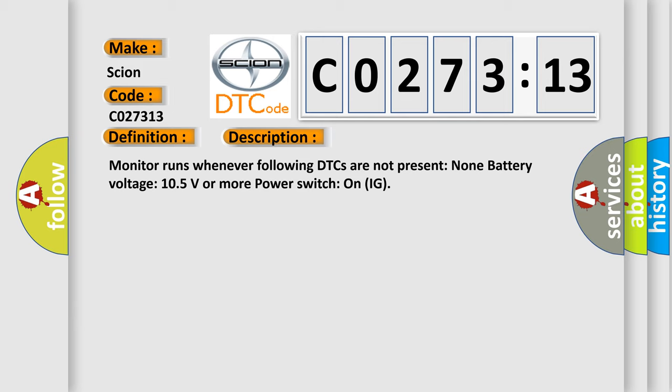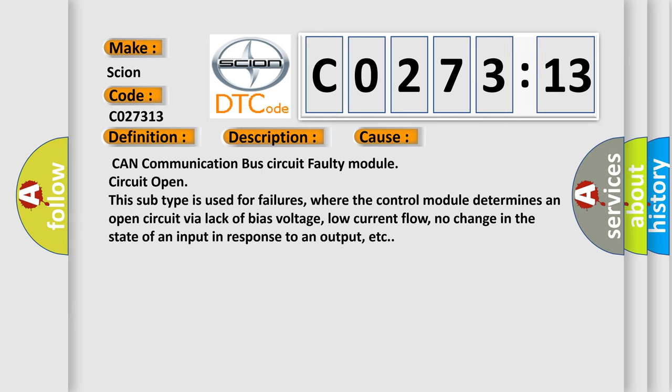This diagnostic error occurs most often in these cases: CAN communication bus circuit faulty module circuit open. This subtype is used for failures where the control module determines an open circuit via lack of bias voltage, low current flow, no change in the state of an input in response to an output, etc.